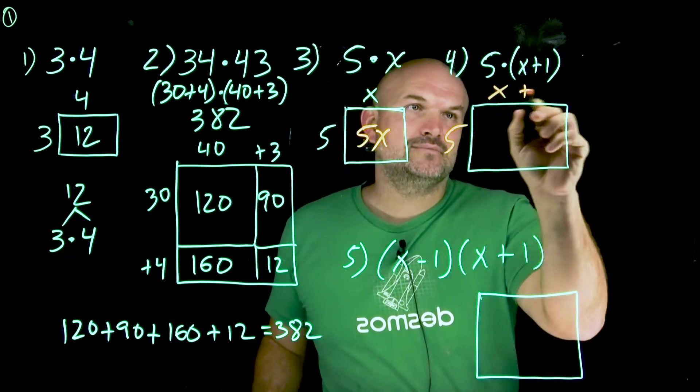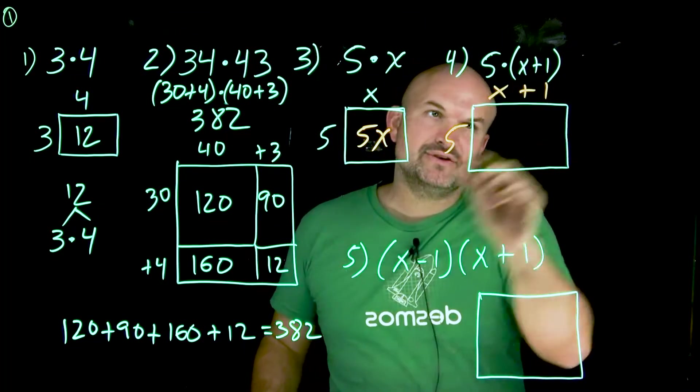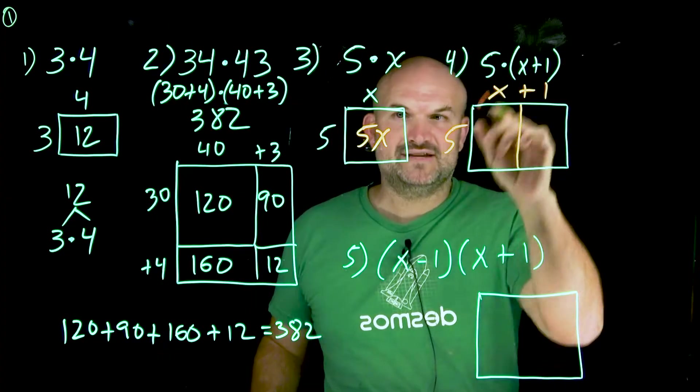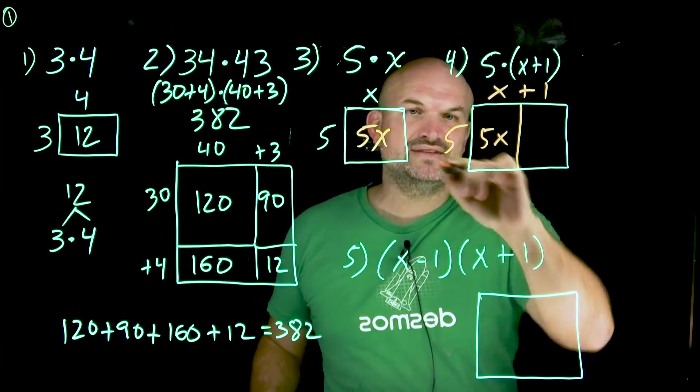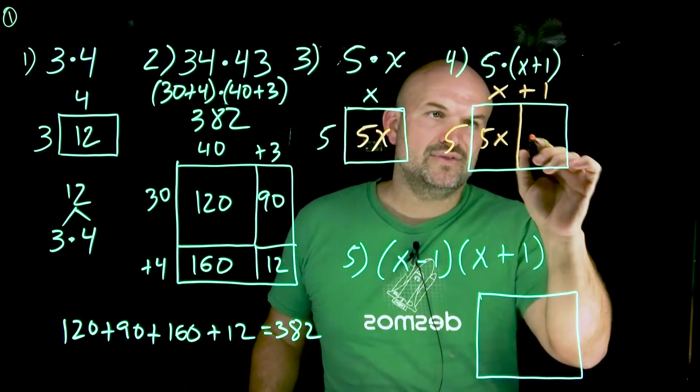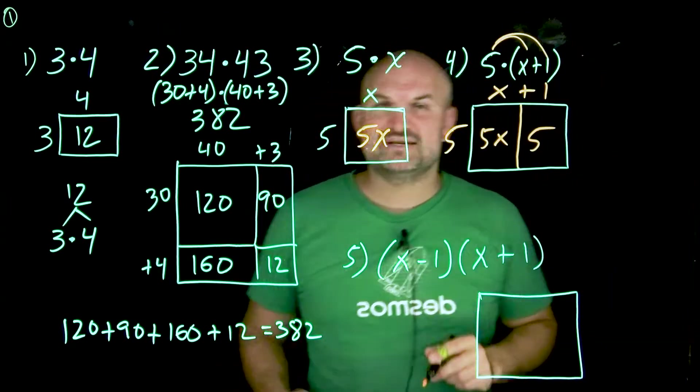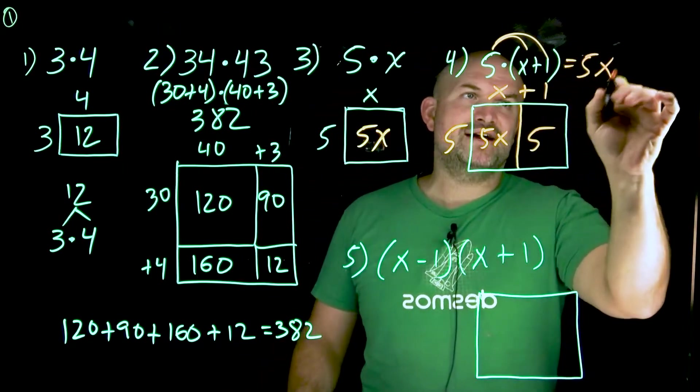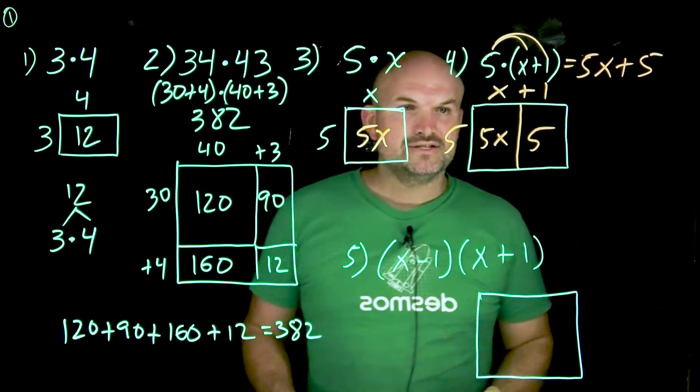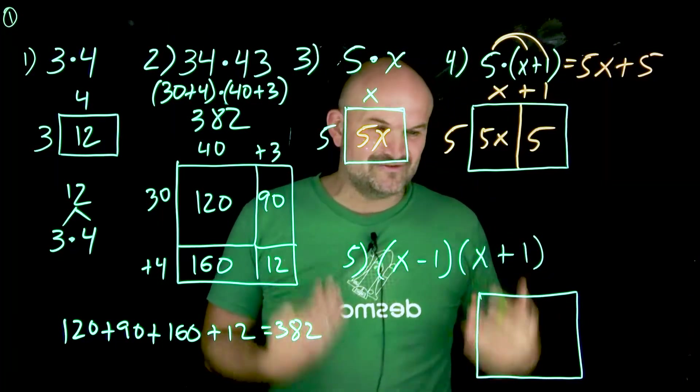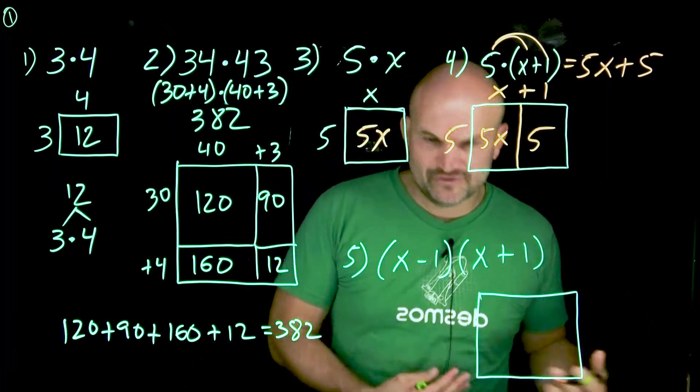We have a five times an X plus one. Again, we can do just like we did over here. We can break this up. Let's find the area of this rectangle, five times X. We already know that's five X. Width of this angle, five times one. Well, that's just going to be a five, right? And hopefully you're familiar with the distributive property. Five times X plus one just equals five X plus five, right? So I just want you to be able to visualize this in terms of an area because once we start getting into variables, things kind of get a little bit confusing.